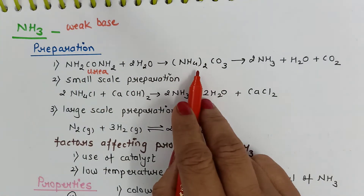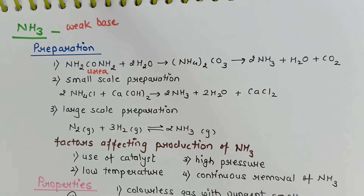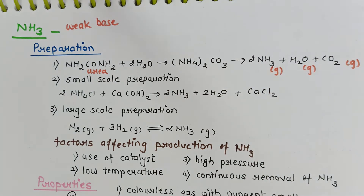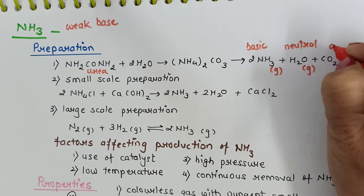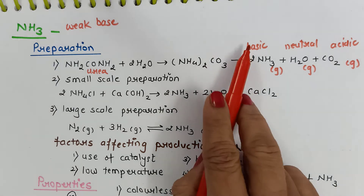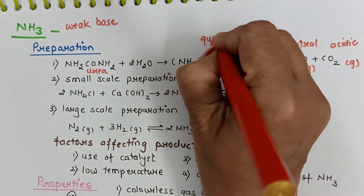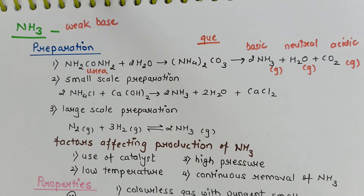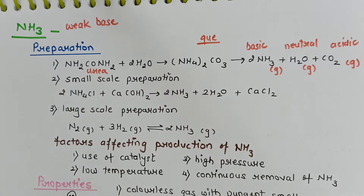The interesting thing about this reaction is that all products are gases. Ammonia is basic, water is neutral, and CO2 is acidic. So this is a reaction where we get all three types of products — basic, acidic, and neutral — all as gases. A question can be framed: 'In a reaction three gaseous products are formed — basic, acidic, and neutral. Identify the reaction.' The answer is decomposition of urea.